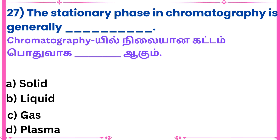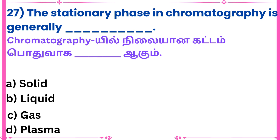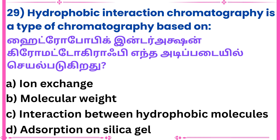Twenty-seventh question: The stationary phase in chromatography is generally — Answer: Solid. Twenty-eighth question: What is the purpose of a fraction collector in chromatography? Answer: To collect individual compounds at different rates. Twenty-ninth question: Hydrophobic interaction chromatography is a type of chromatography based on — Answer: Interaction between hydrophobic molecules.